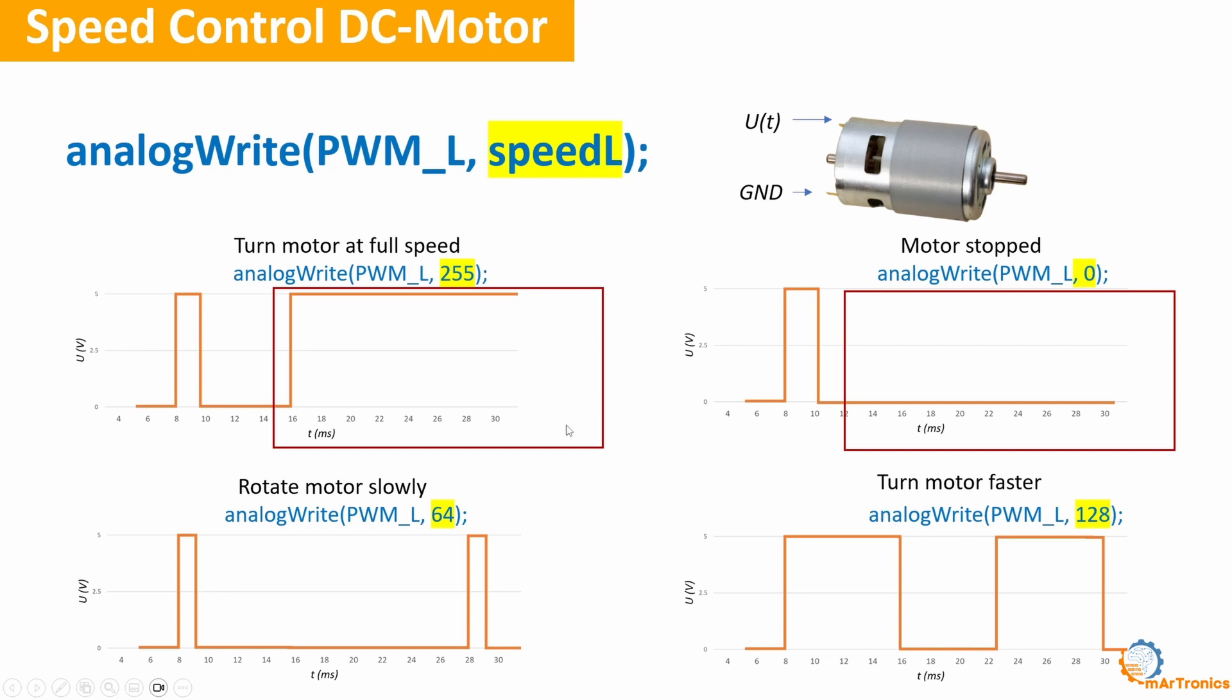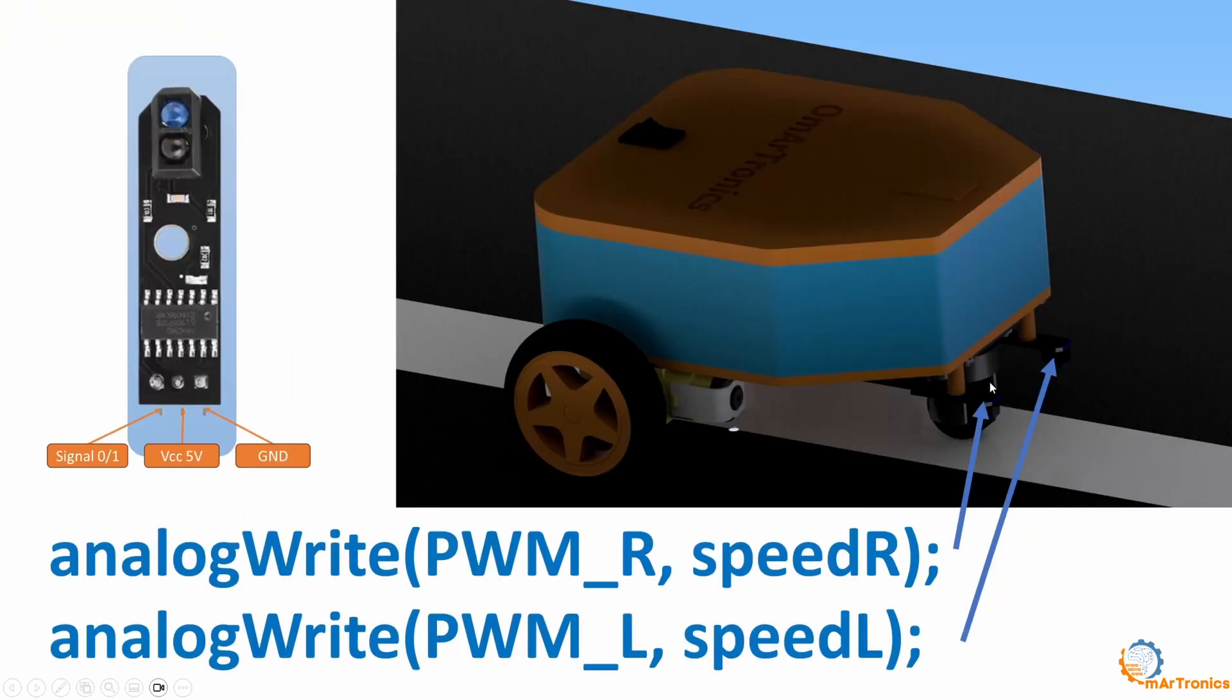Now I will quickly summarize. Here we have the maximum speed, while here the motor is completely off. Here, a very low speed, and here medium speed. All of this is specified at the code level.